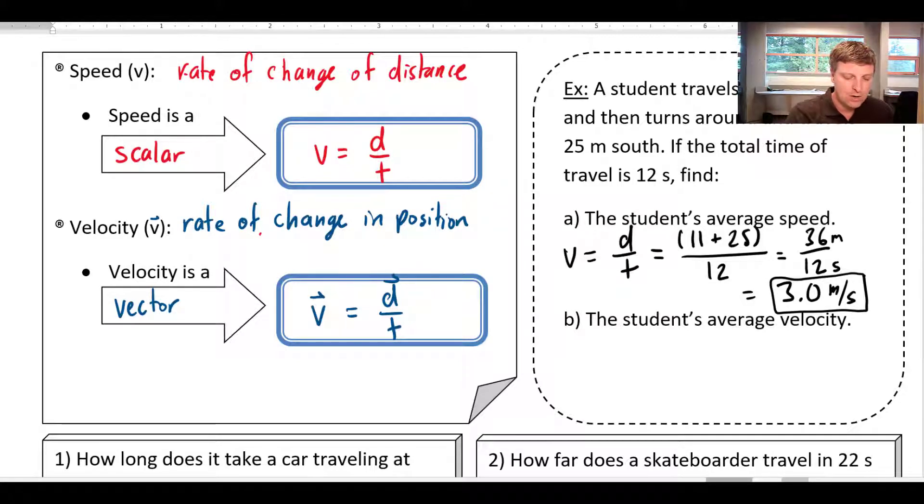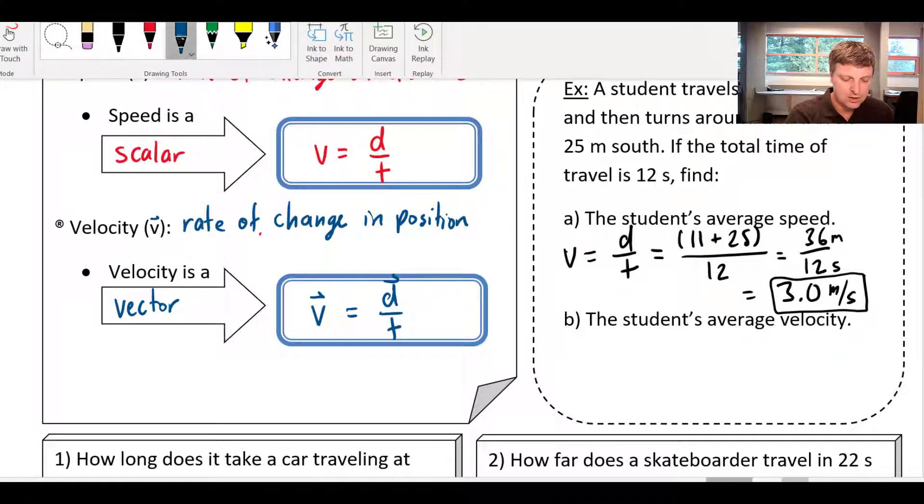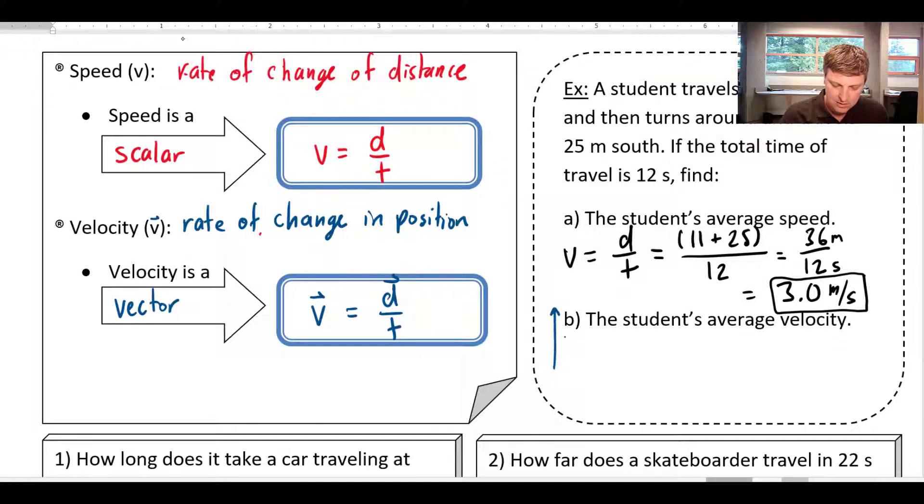So if I want to figure out the velocity here, I might just draw a little picture on the side. What happened? A student traveled north 11 meters. They went north 11 meters and they turned around and then went south 25 meters.